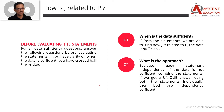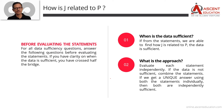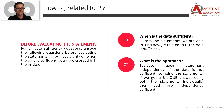Both questions seem to be the same, but there is a subtle difference. The first wording is 'How is J related to P?' The second wording is 'What is the relationship between J and P?' These two have different implications when we evaluate data sufficiency.